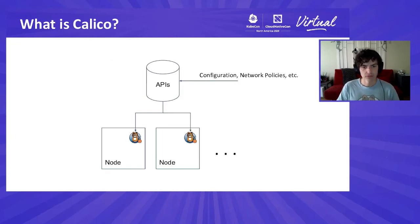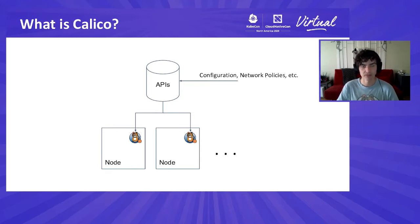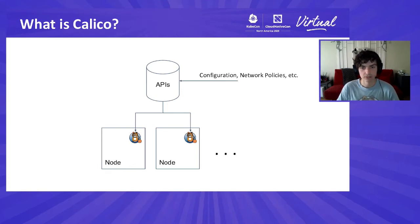For those of you who might not be familiar with Calico, at a high level it works like this: users specify high-level descriptions of how they want their network to behave, either via the Kubernetes API, Calico APIs, or both. This is stuff like network policies, BGP configuration, etc. That configuration is in turn read by the Calico components running on every node in your cluster, which then combines it with locally running pod information to set up each node with the correct network programming.